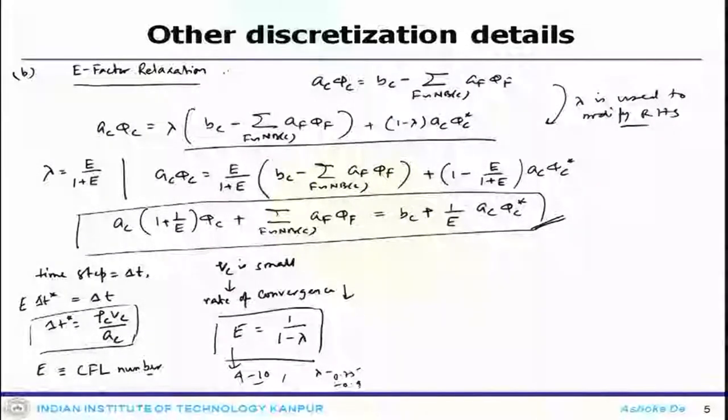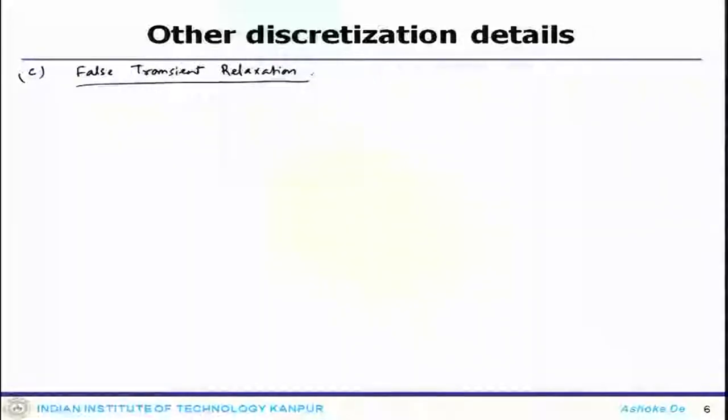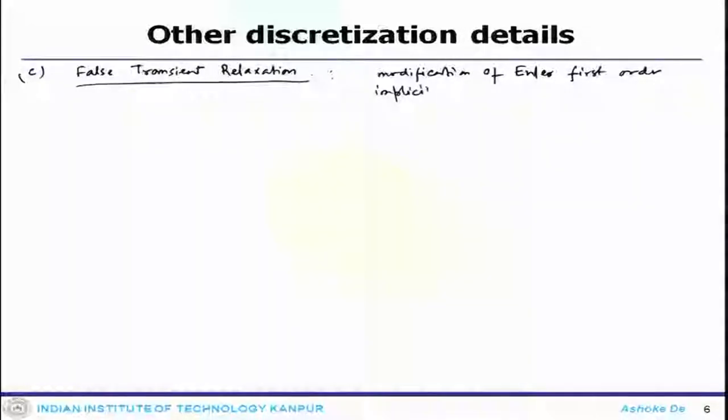These are two different things. The third one we can talk about is the false transient relaxation. In this case, the false transient relaxation method is a modification of the Euler first-order implicit transient method. It is essentially obtained by modifying the Euler first-order transient method.